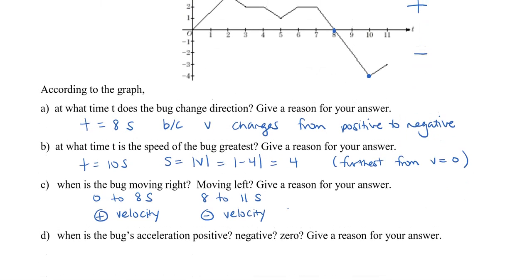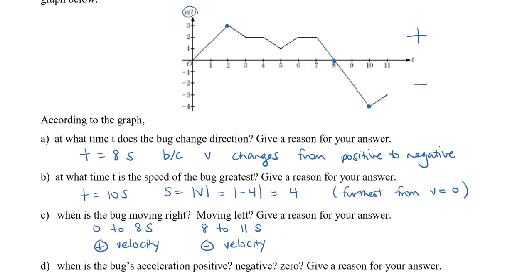When is the bug's acceleration positive, negative, or 0? When we're looking for acceleration on the velocity graph, we're actually looking for the slope. Because remember, the acceleration is actually one derivative higher than velocity. So, when we're reading the graph, we're looking at the slope of the different parts.